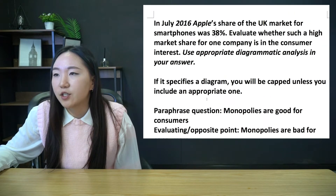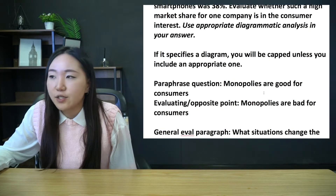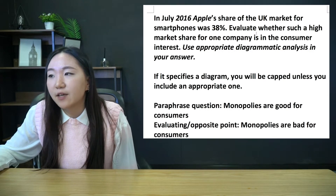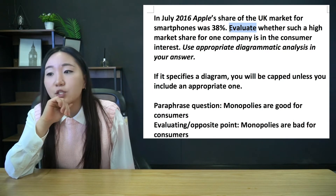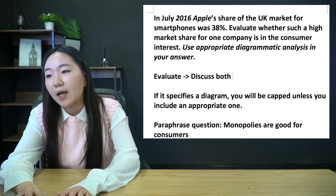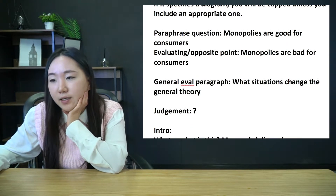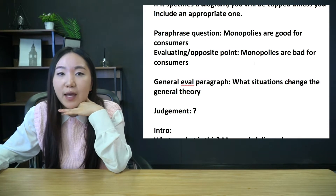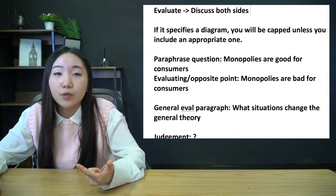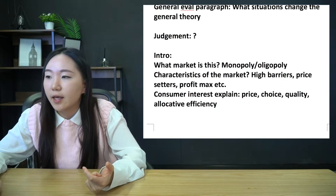We paraphrase the question to make it easier to understand because there's a lot in here. We're saying monopolies are good for consumers - that's essentially what it's asking. And as a result, we've got to make sure we've understood the opposite or evaluating point: monopolies are bad for consumers. It's asking evaluate, which similar to critically examine, just means discuss both sides. If you don't discuss both sides, that will be incorrect and you will be capped. The general evaluation paragraph I have in mind is: what situations change the general theory discussed above - are there any special cases? And then the judgment: you have to answer the question and say yes or no, Apple is or is not in the best interest of consumers.